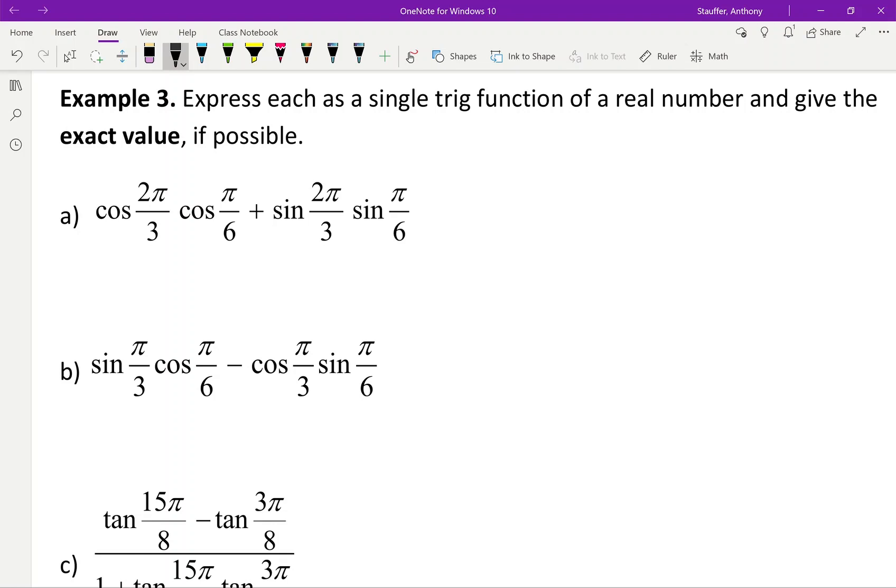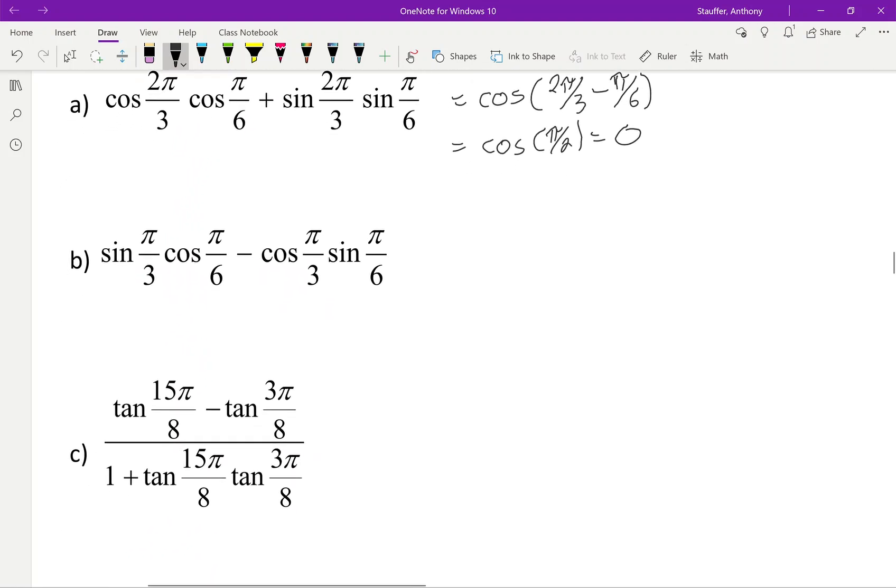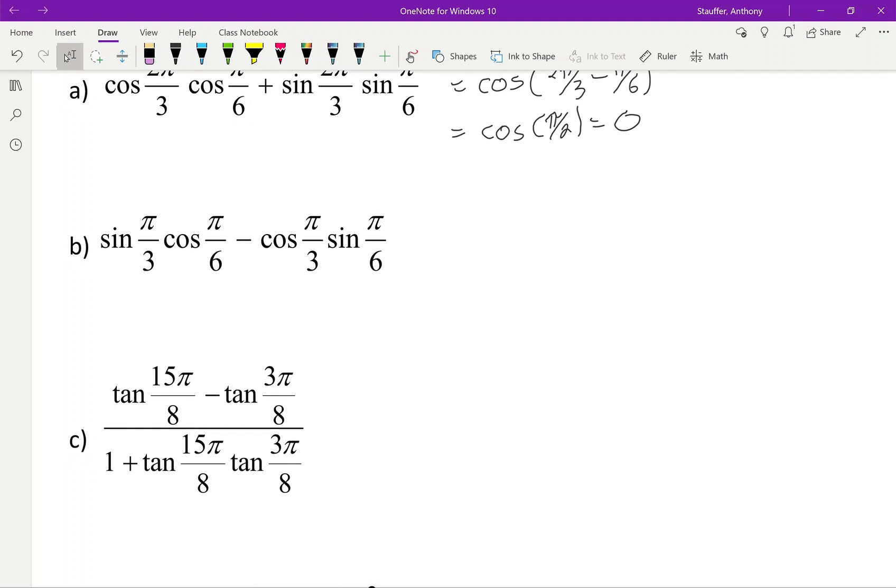So we go back in time and we look up at the formulas on our formula sheet and we notice that this is just the cosine difference. So it's going to give me cos of 2π/3 minus π/6, which ends up equaling cos of π/2, which would equal 0. Now again if you guys want you can convert this to degrees and then handle it. There is nothing wrong with that. I'm just going to keep on trucking though because I don't want to take up too much of your time with this lesson.